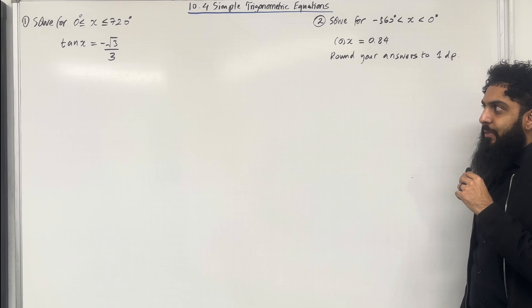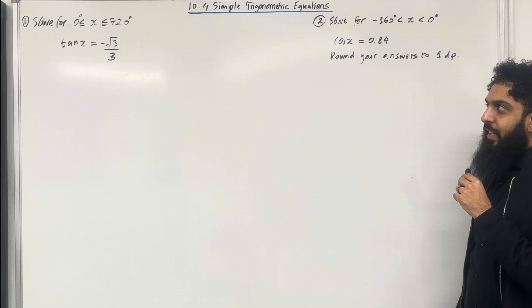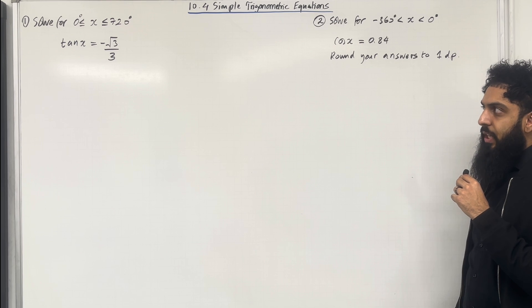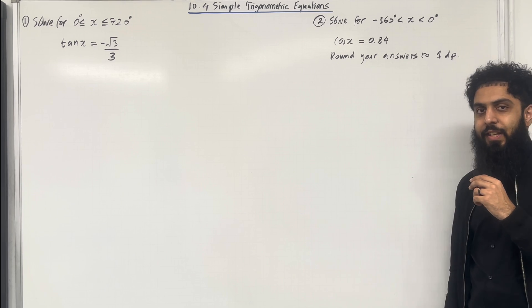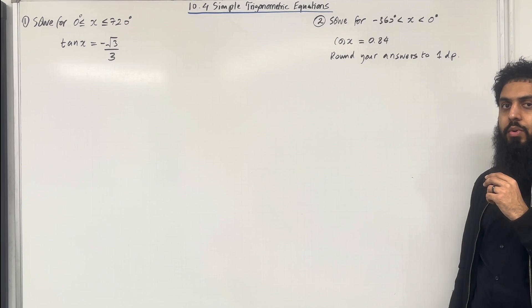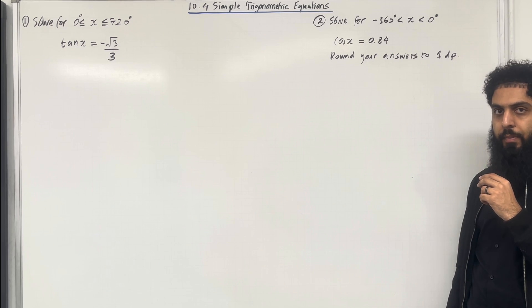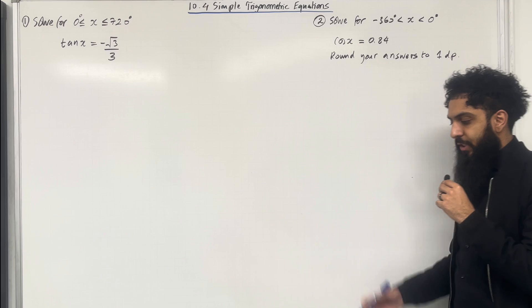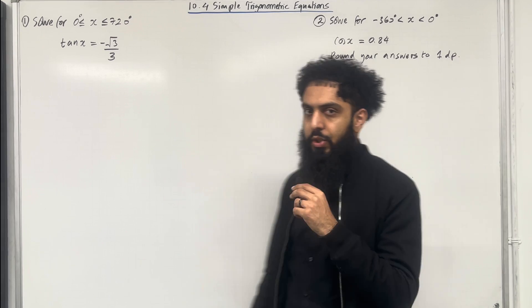For x is more than or equal to 0 degrees but less than or equal to 720 degrees, tan x equals minus square root 3 over 3. Let's proceed with the solution.